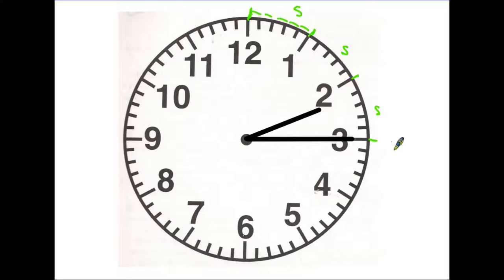You'll notice that the small hand has moved a little way past the two. We are 15 minutes past two, which is also known as a quarter past, because the large hand has gone a quarter of the way around the circle.